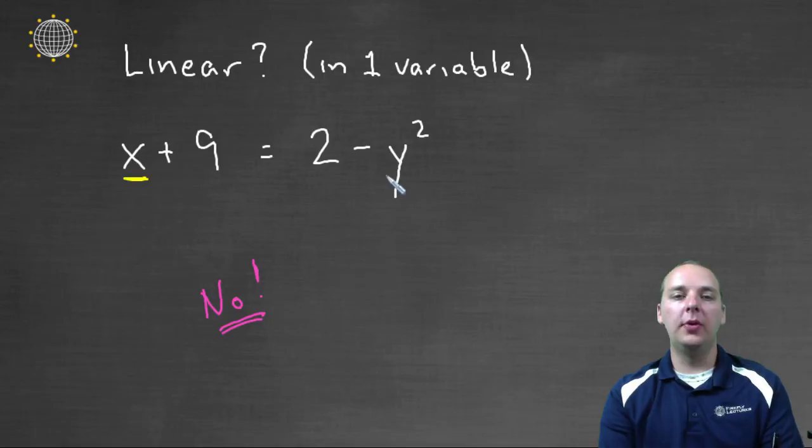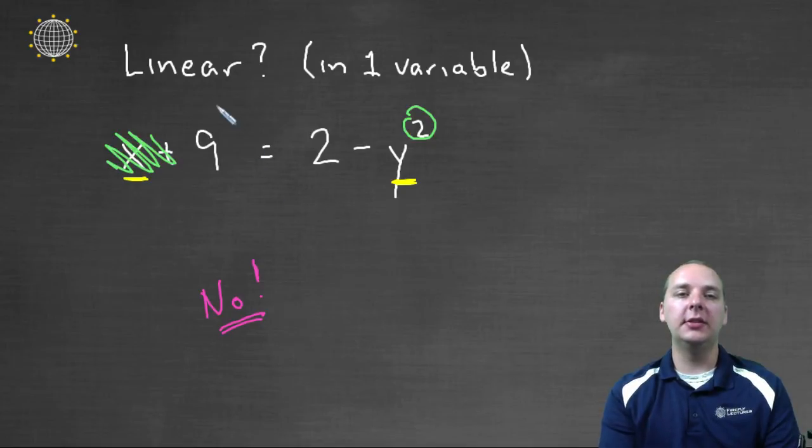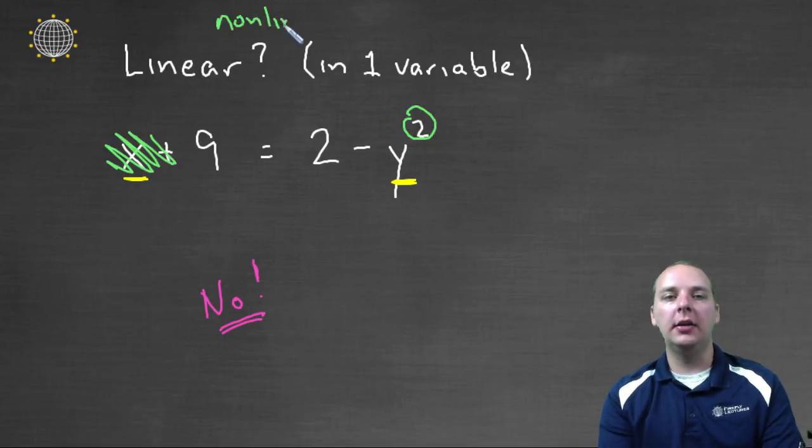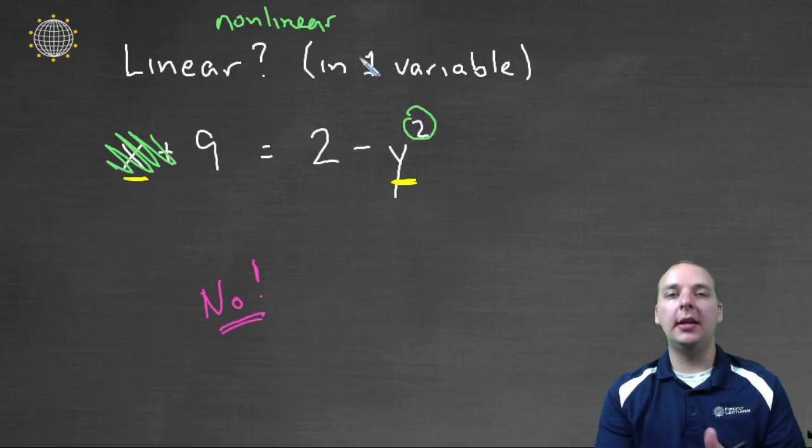One is because there's more than one variable. You have x's and y's. And another reason is, even if you didn't have this x and it was just a y, it still would not be linear because this y is being squared. And you can't have that either. So for a variety of reasons, this equation is not linear, or again, we would say non-linear. So anyway, hopefully that helps you better understand what's a linear equation and what's a non-linear equation.